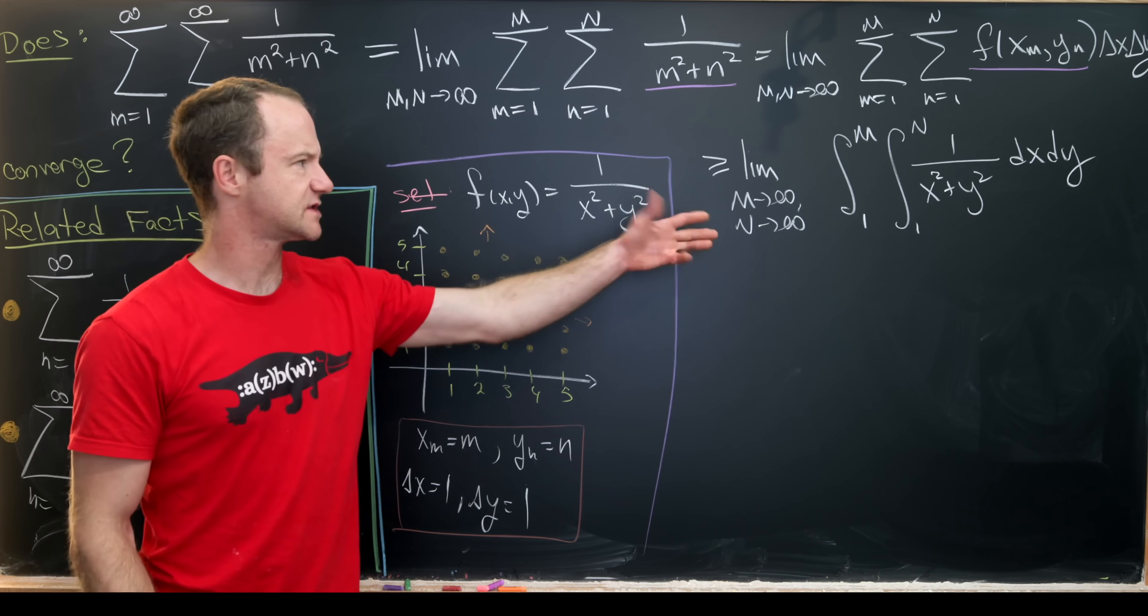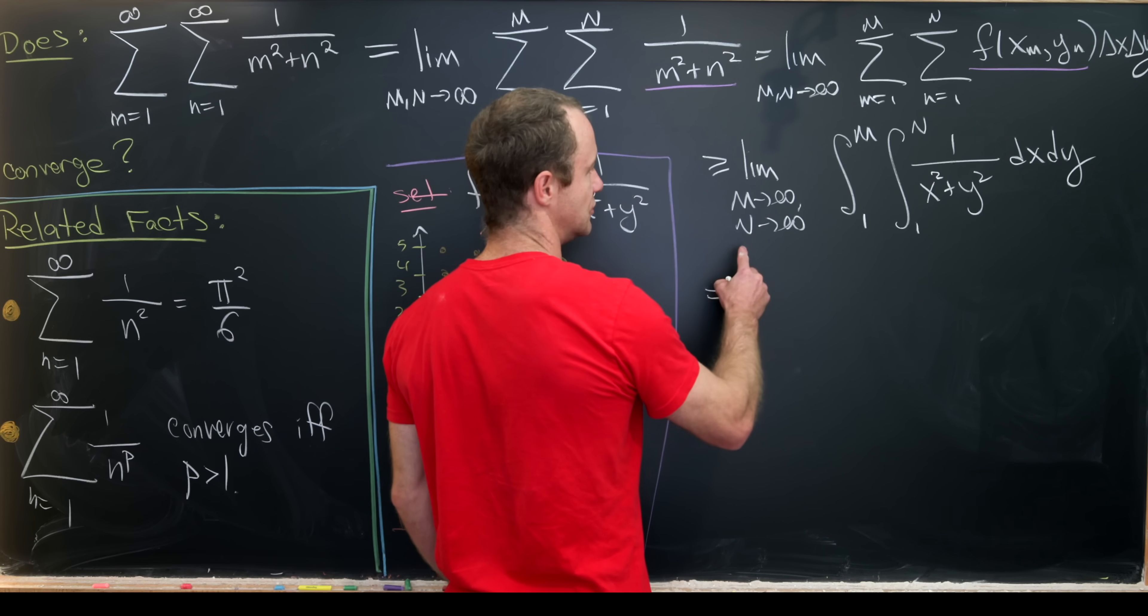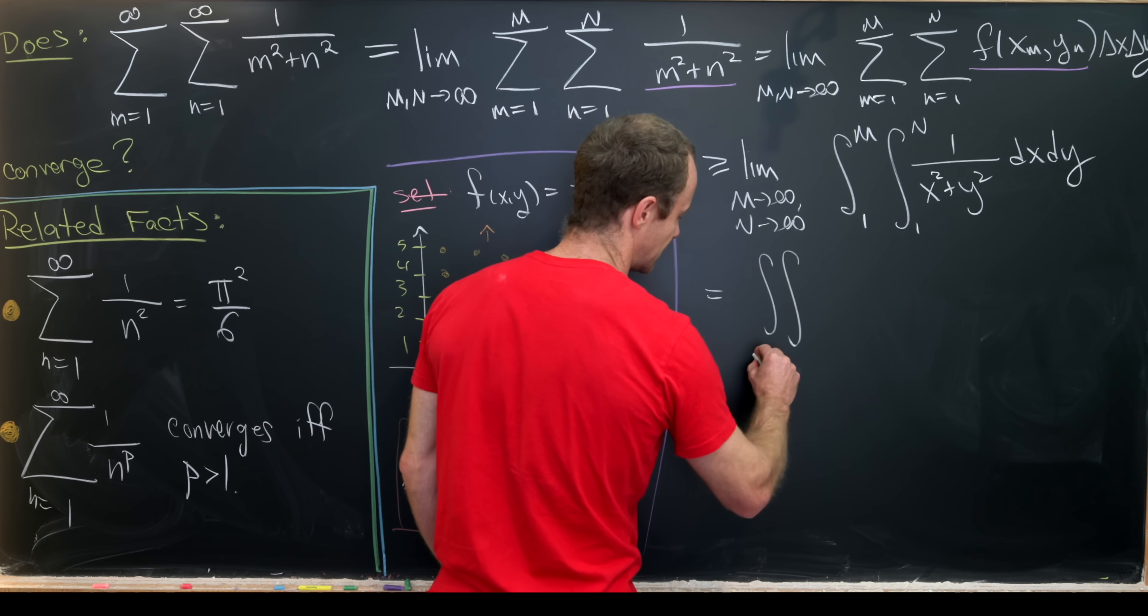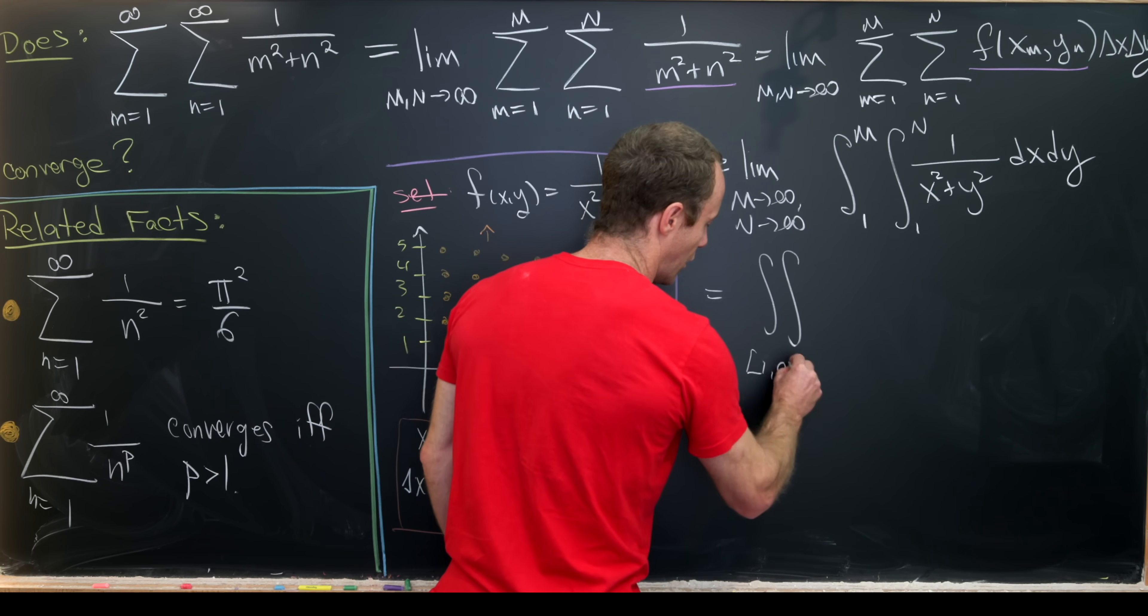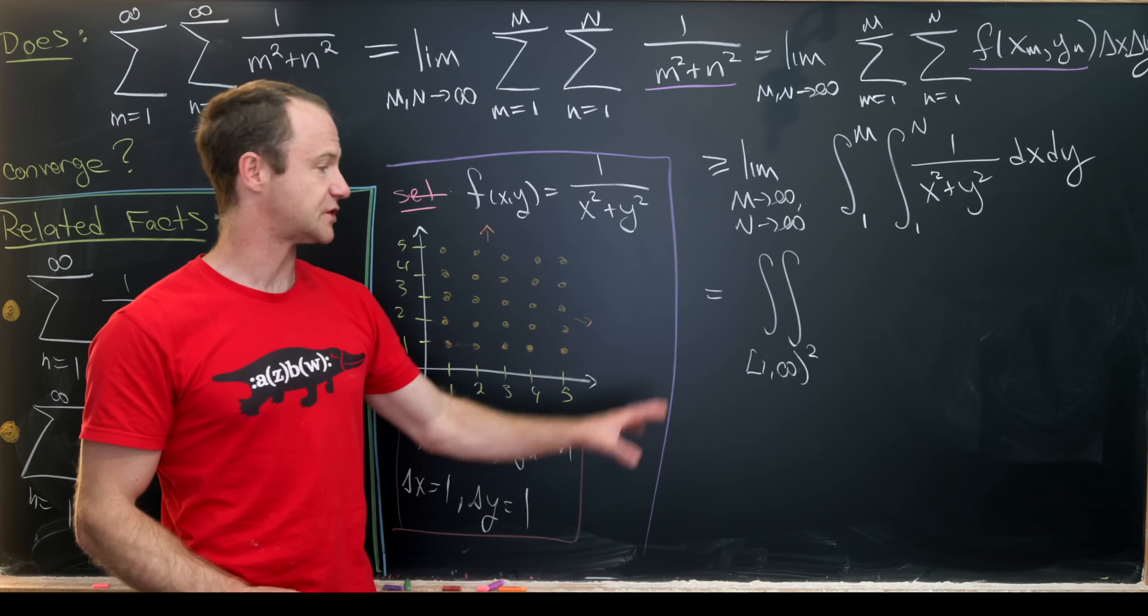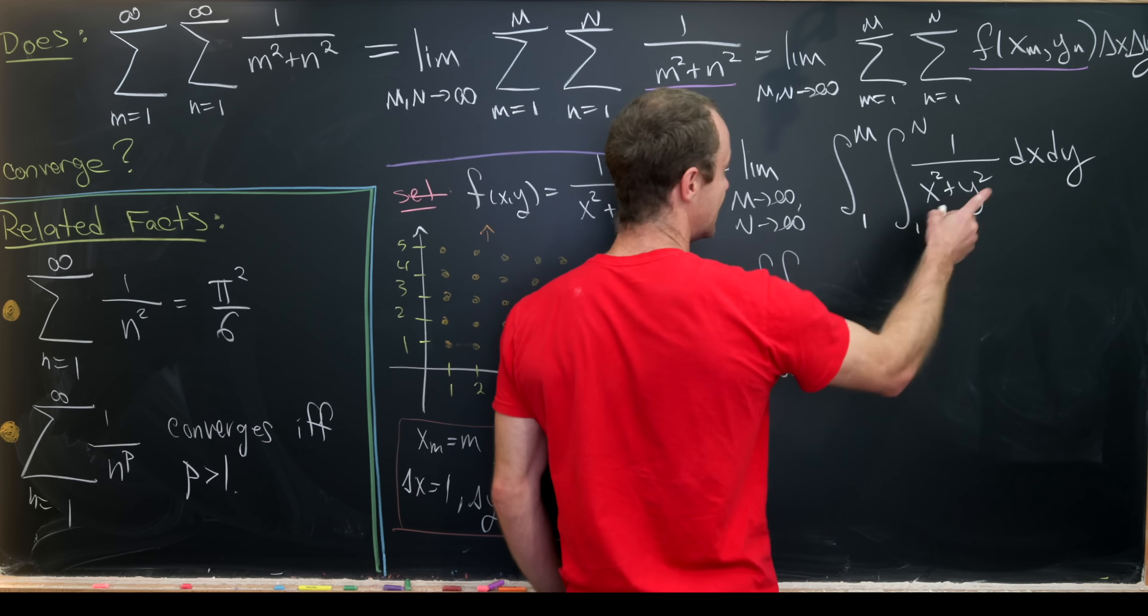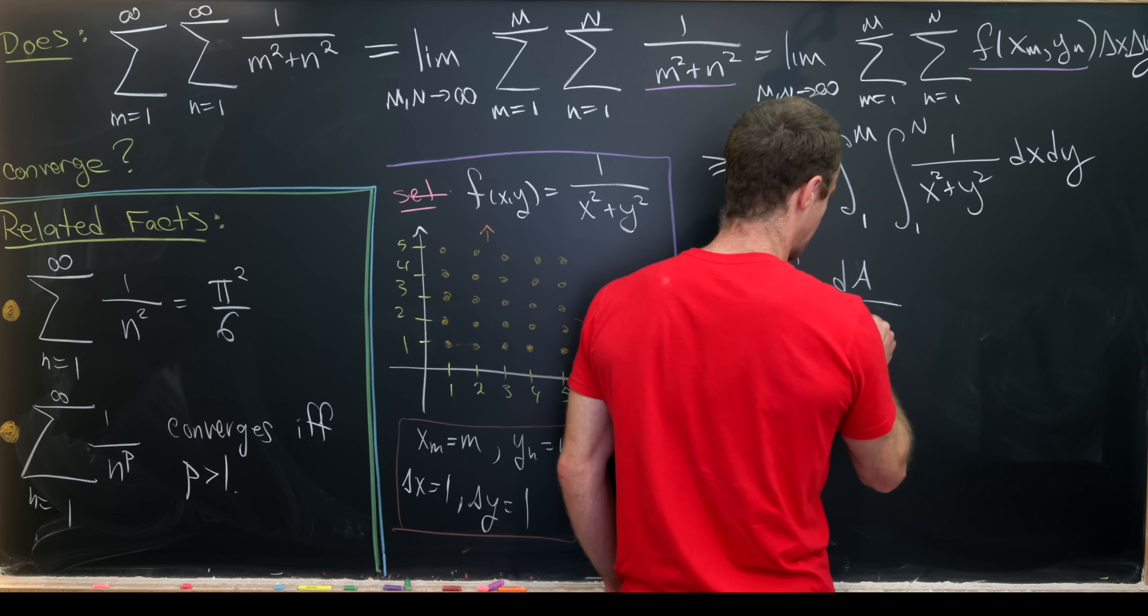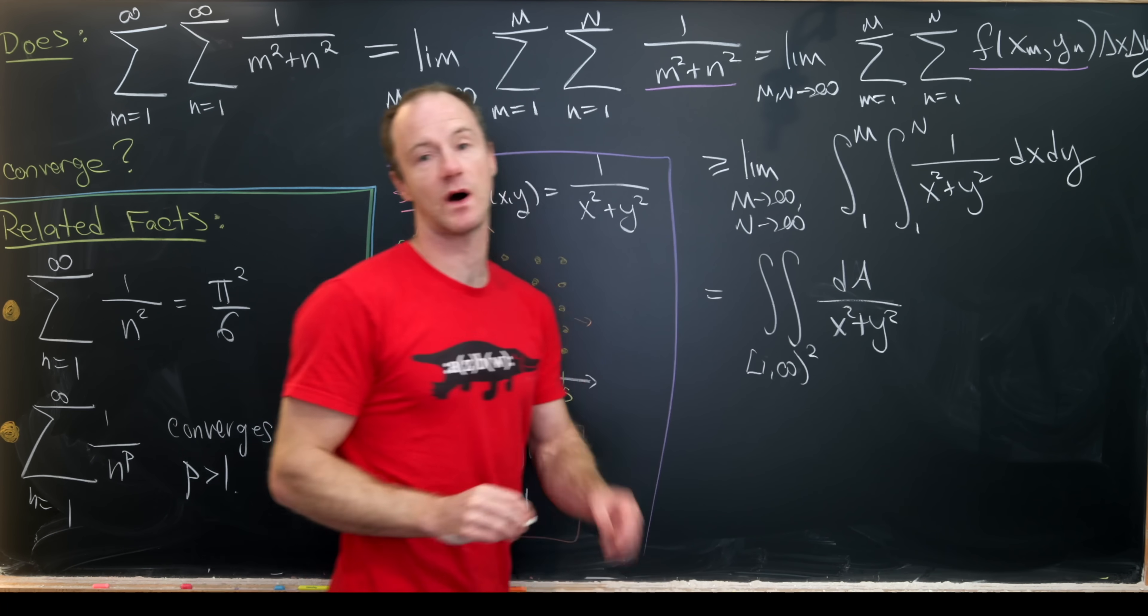But let's notice that this is equal to a double integral from 1 to infinity. So in other words, a double integral over 1 to infinity squared. So that half-open interval and then we'll write dx dy as dA and then we have 1 over x squared plus y squared.